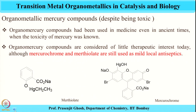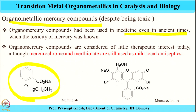Another use of organometallic compounds involves mercury. Organometallic mercury compounds, despite being toxic, have been used in medicine since ancient times. Two mercury compounds — mercurochrome and mercurothiolate — are organometallic compounds containing metal-carbon bonds, and they are used as mild local antiseptics. This demonstrates organometallic compounds of mercury being used for antiseptic purposes.